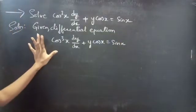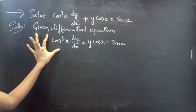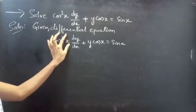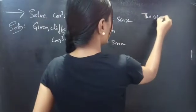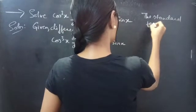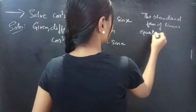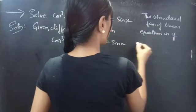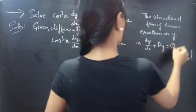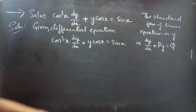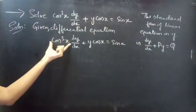We can make this equation into a linear equation in y form. That is, the standard form of linear equation in y, by making the coefficient of dy/dx equal to 1. We know that the standard form of linear equation in y is dy/dx + P·y = Q, where the coefficient of dy/dx is 1. So, we will make the coefficient of dy/dx equal to 1.